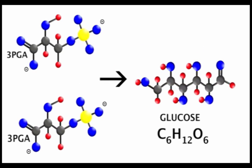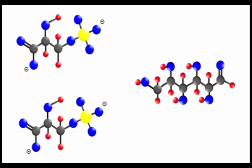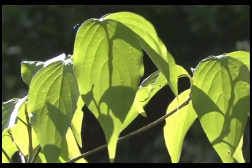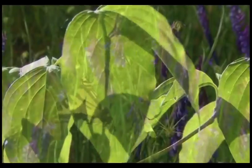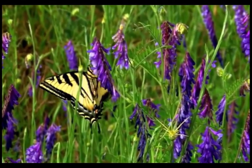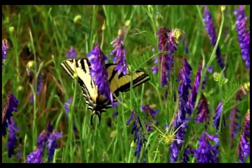Glucose is the ultimate product of photosynthesis because its chemical bonds store the energy that was captured from sunlight during the light reactions of photosynthesis. And glucose is the key nutrient that is broken down during aerobic respiration to generate the ATP that is used to power the activities of living things.